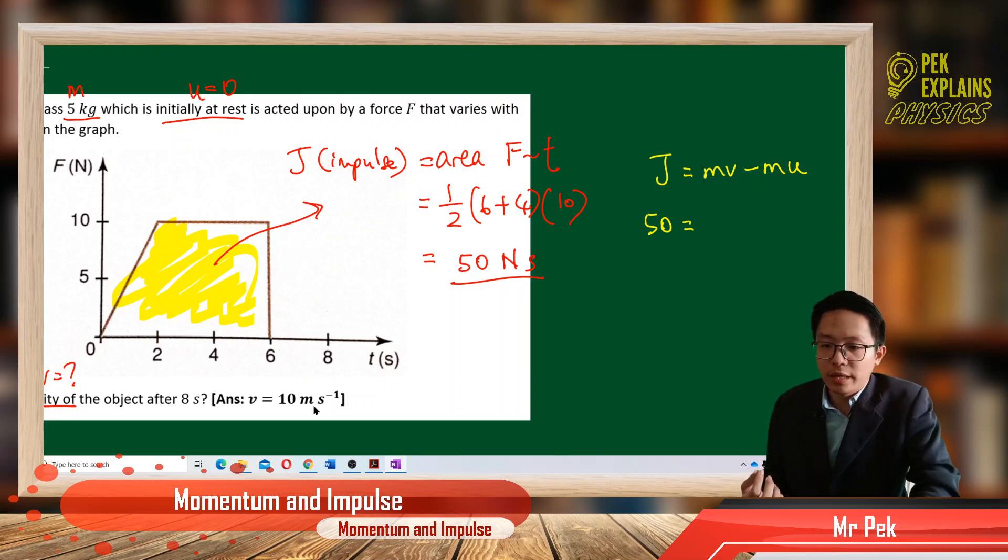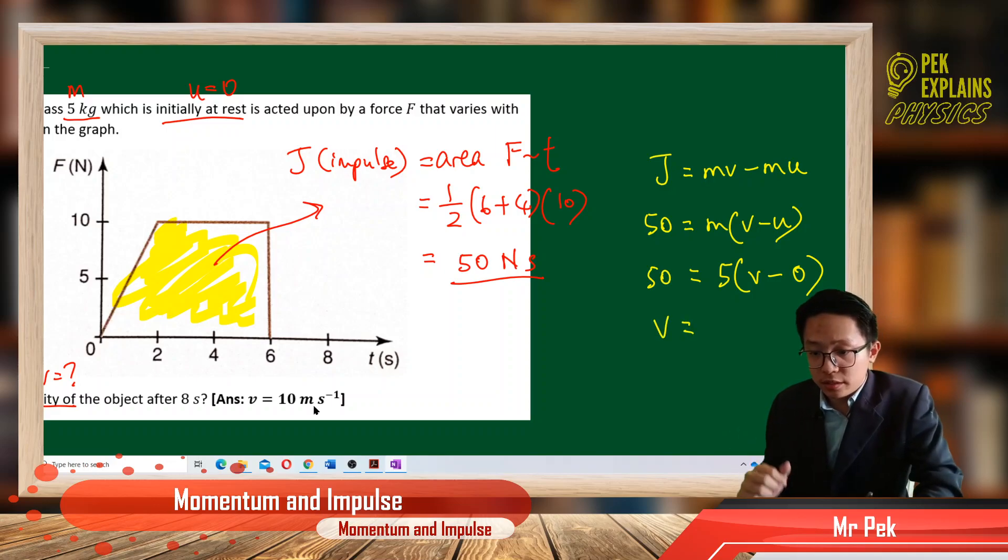And the mass, we can actually factorize out the mass first because it is common. Now the mass is 5 kilograms and the final velocity we want to find, the initial velocity is at rest, 0. So we have the final velocity which is 10 meters per second.